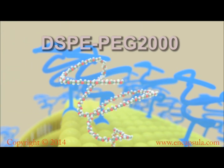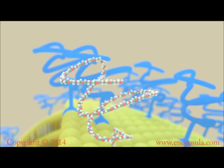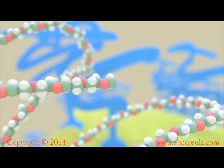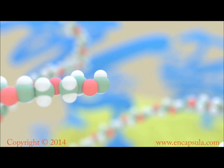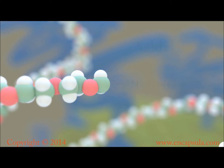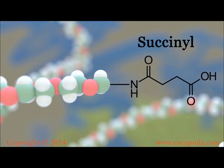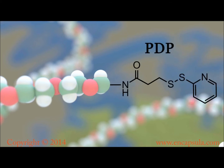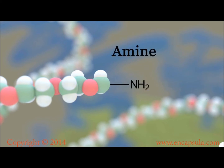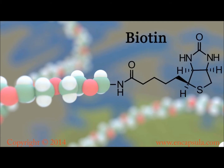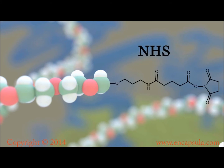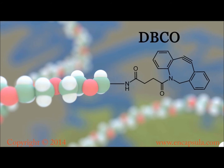Regular doxosome formulations do not contain reactive lipids for protein, peptide, and antibody conjugation. Immunodox formulations contain various reactive pegylated lipids on the surface of the liposomes, which make each pegylated liposome suitable for conjugation with various compounds that can react with azide, succinyl, carboxylic acid, maleimide, PDP, amine, biotin, CEONOR, NHS, and DBCO.